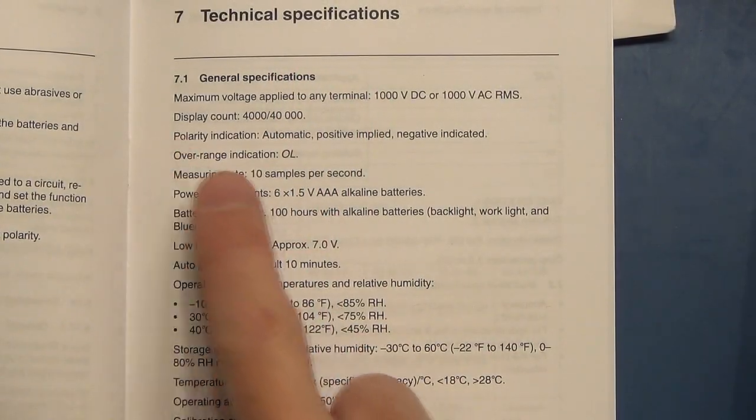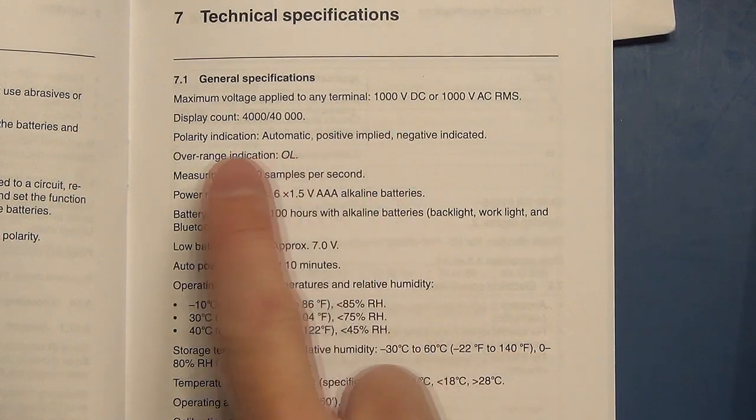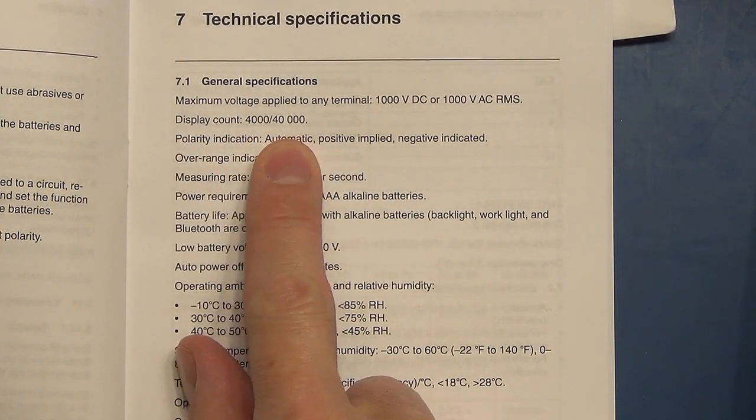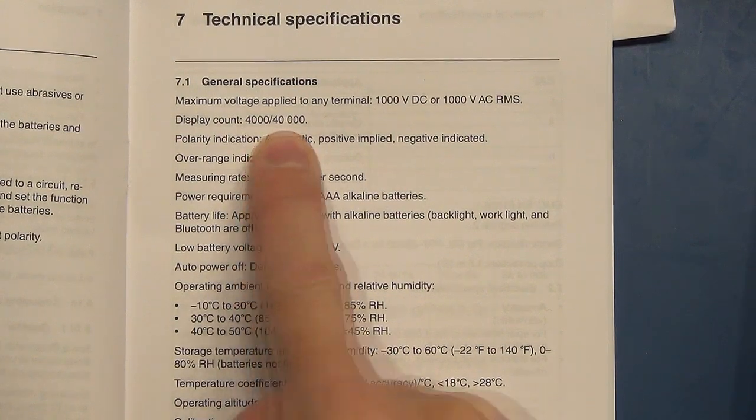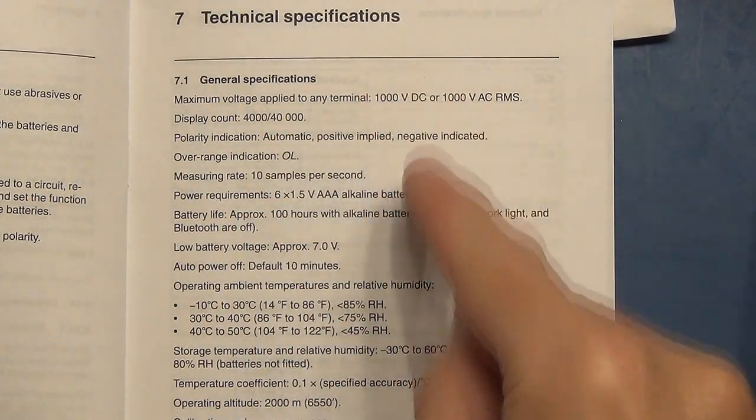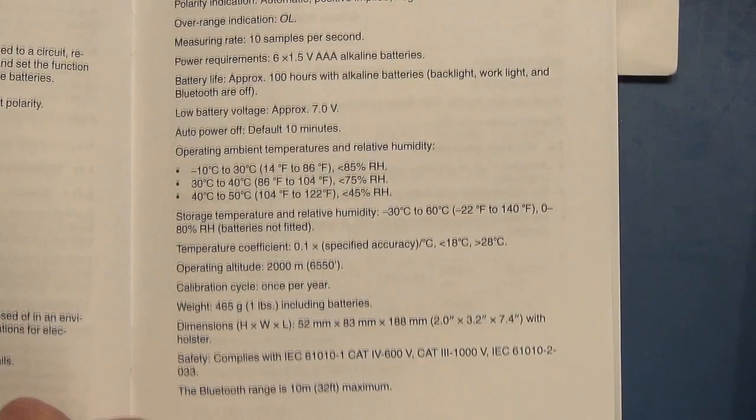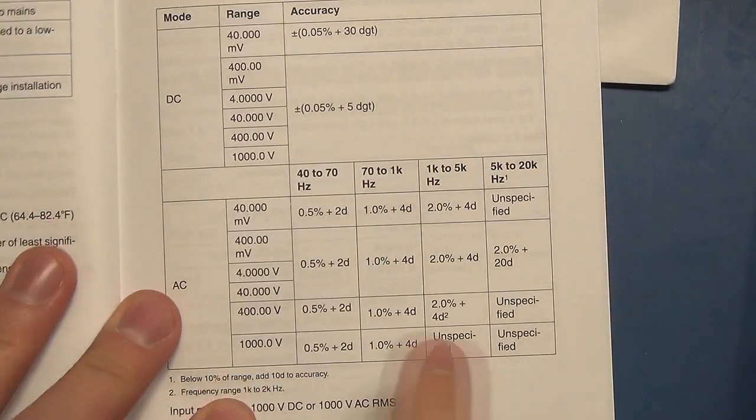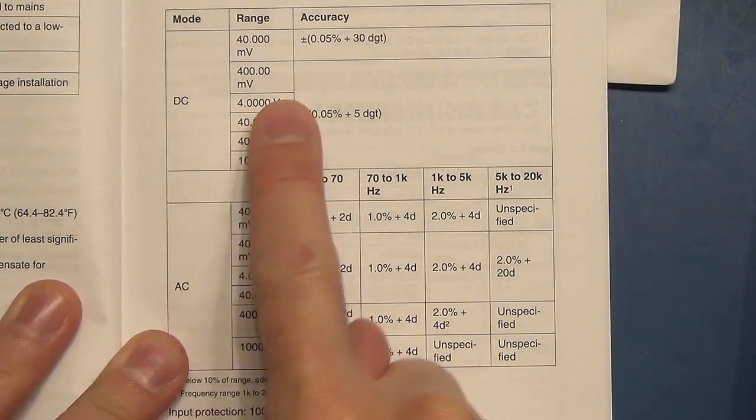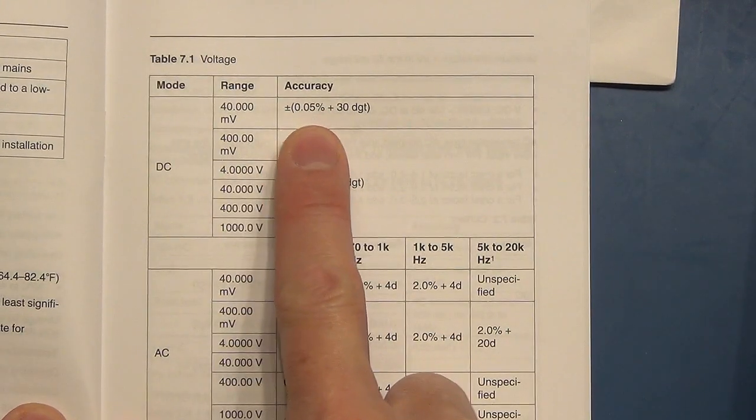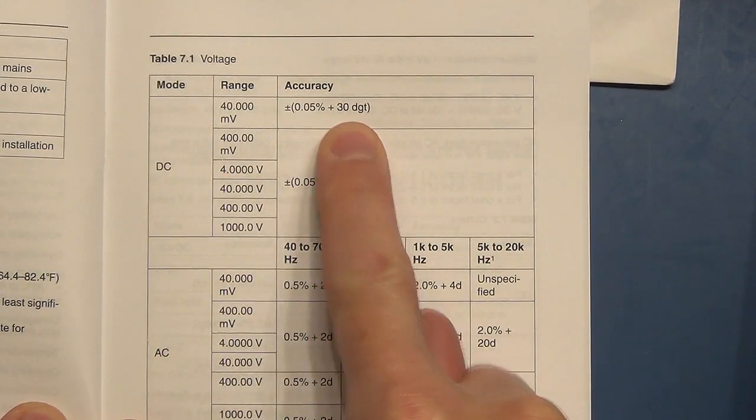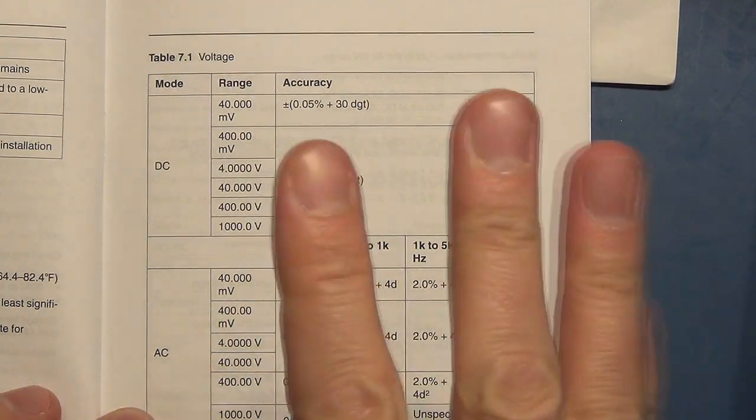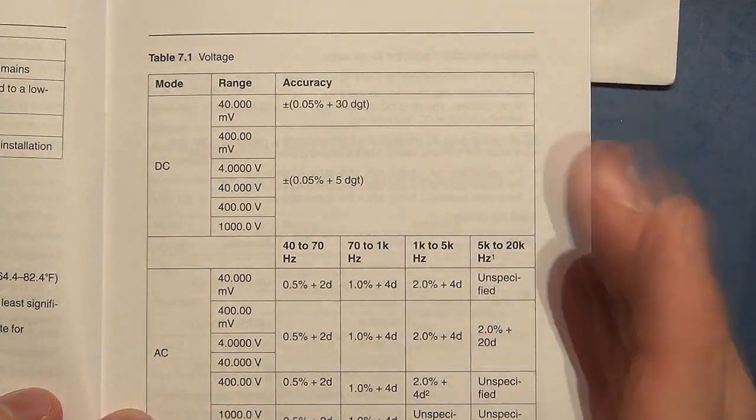I'll just point out some of the quick specifications at quick glance. The ones that catch my eye is that it's a 4000/40,000 count meter which has got nice resolution. You can obviously pause or have a look at the rest of the specifications on the page. And then just a quick look at the DC accuracy. They're saying 0.05% plus 30 digits which again seems to be a nice accuracy reading but we'll confirm all that in the actual full review.